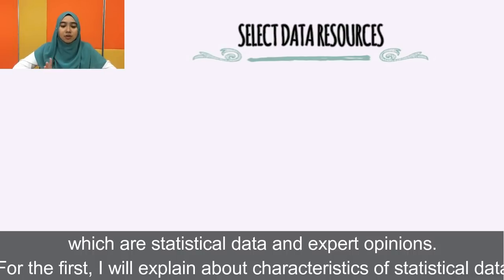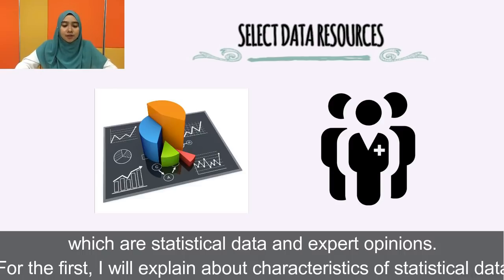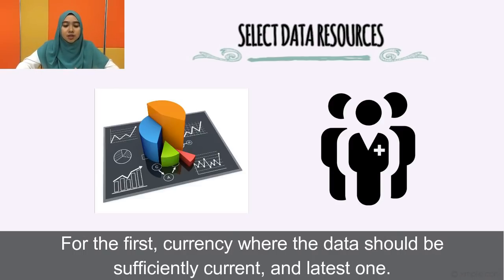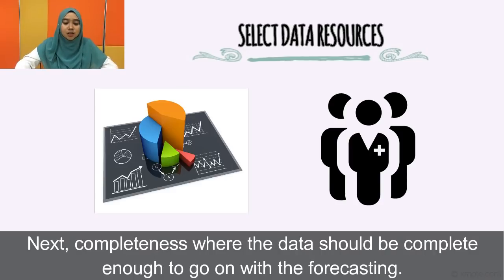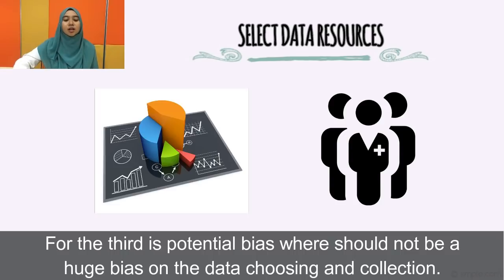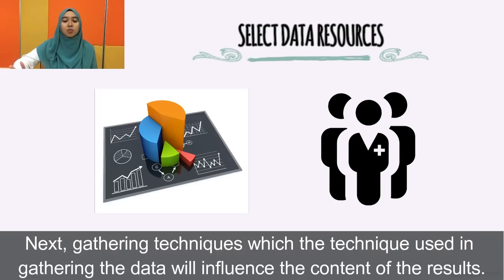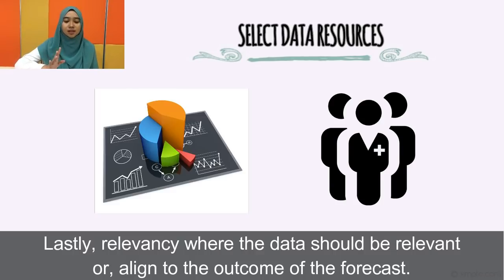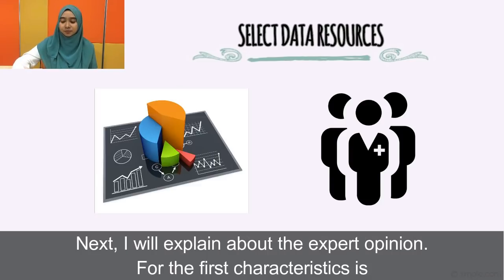For statistical data, the characteristics are: first, currency — the data should be sufficiently current and the latest available. Next, completeness — the data should be complete enough to proceed with forecasting. Third, potential bias — there should not be a huge bias in data selection and collection. Fourth, gathering technique — the technique used in gathering data will influence the content of the result. Lastly, relevancy — the data should be relevant and aligned to the forecast outcome.